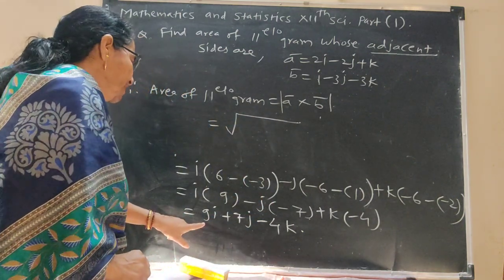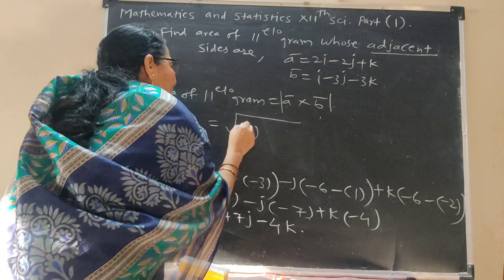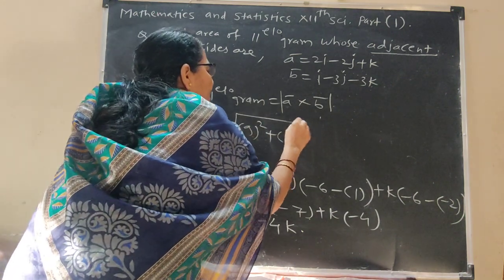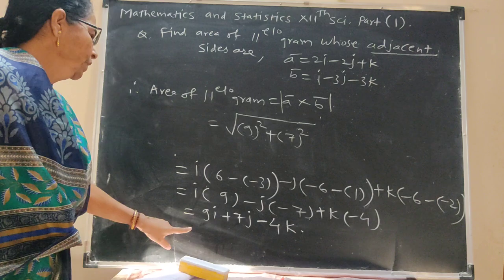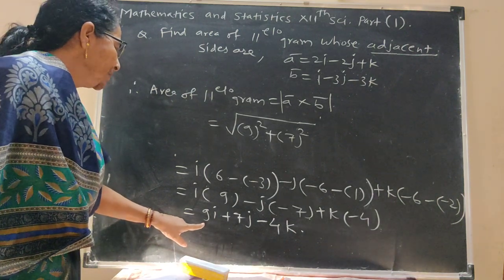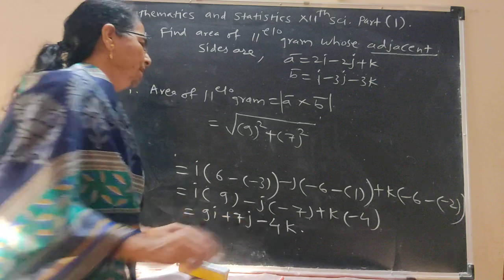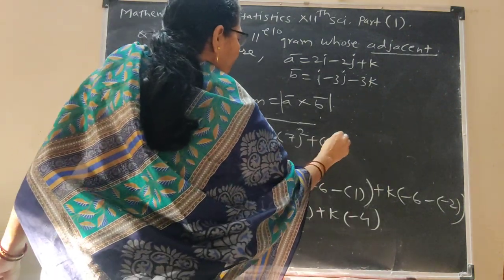Square of these terms: 9 square, 7 square. A bar cross b bar is this value, coefficient square. So 9 square plus 7 square plus minus 4 square.